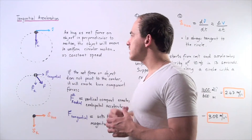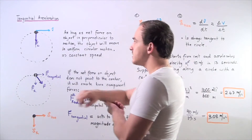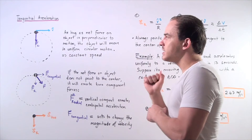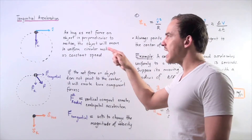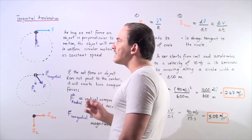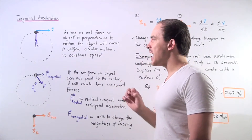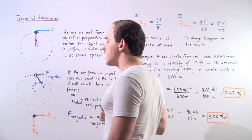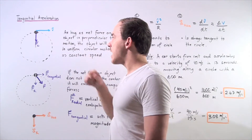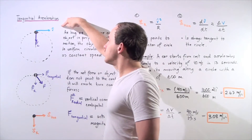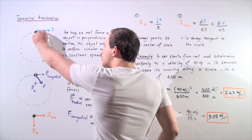Let's suppose that we have an object undergoing uniform circular motion. At any given time, if we examine the velocity vector and the net force acting on our object, we see that they act exactly perpendicularly to one another at a 90-degree angle. The net force acting on the object, which creates our acceleration, always points towards the center of our circle, while the velocity vector is always tangent to the circle — so they're always at a 90-degree angle.